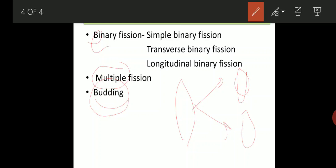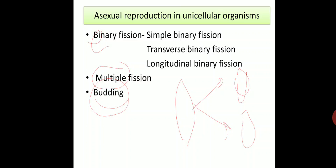In the next class, we are going to study the methods of asexual reproduction in unicellular organisms with the help of diagrams, covering simple binary fission in Amoeba, transverse binary fission in Paramecium, and longitudinal binary fission in Euglena.